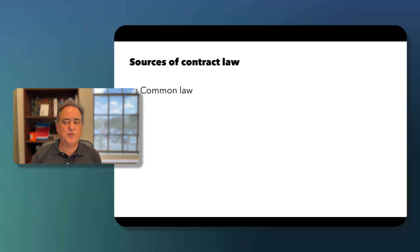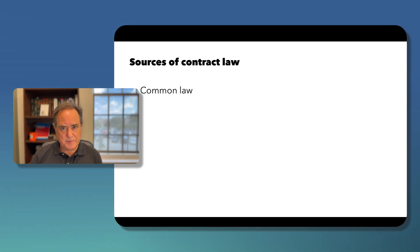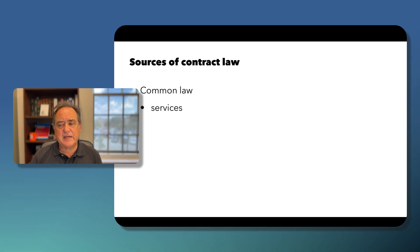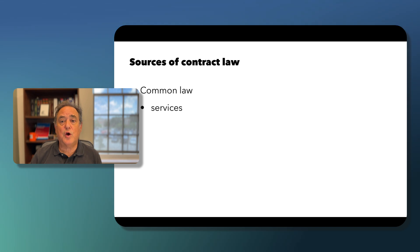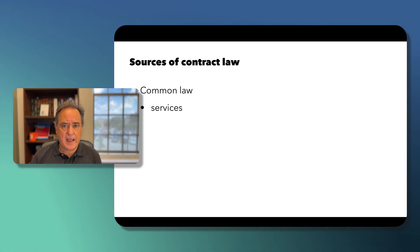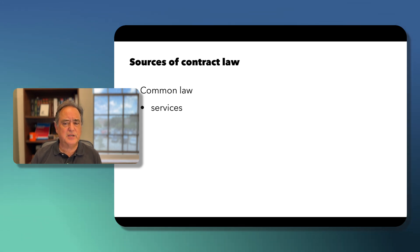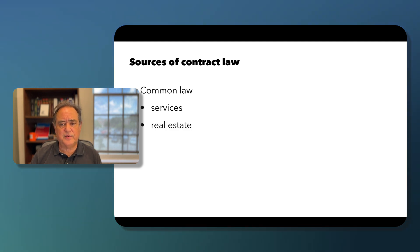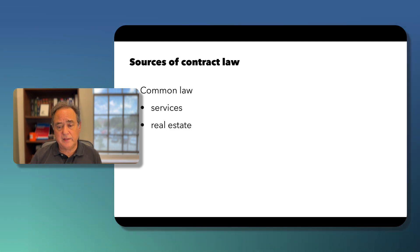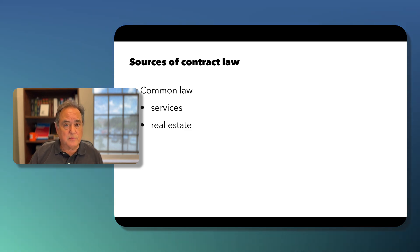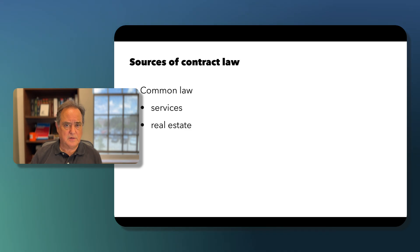Where does contract law come from? First, the common law — law that comes from cases — controls certain types of contracts, primarily contracts for services. If you go to an accountant, a lawyer, or a tennis instructor, those contracts are subject to the common law. Similarly, real property is also subject to the common law. If you are selling a house, you are subject to the common law contracting system.